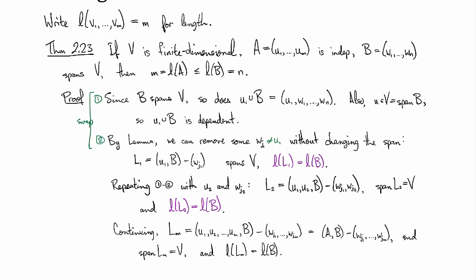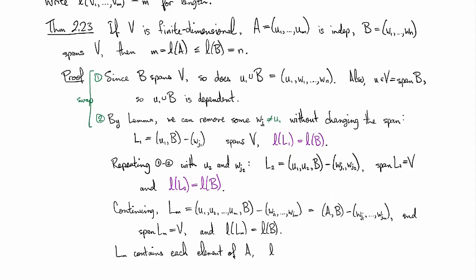And so since LM contains each element of A, we have that the length of A is less than or equal to, just by containment, the length of LM, which is the length of B. And we are done.